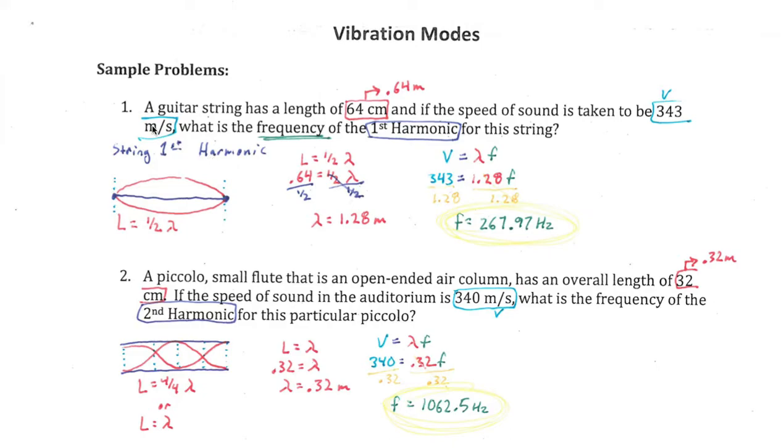So like it says, the guitar string has a length of 64 centimeters, and if the speed of sound is taken to be 343 meters per second, what's the frequency of the first harmonic for the string? So there's a whole lot going on here. First of all, before we deal with much anything else here...